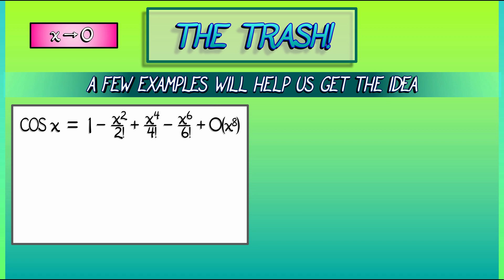And what that means is that all of those higher order terms are all, roughly speaking, of order x to the 8th or higher. Or more properly, that everything that appears in that tail is going to be less than x to the 8th times some constant.